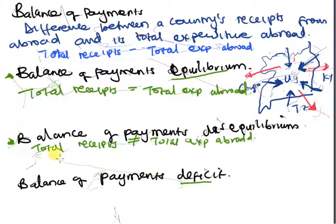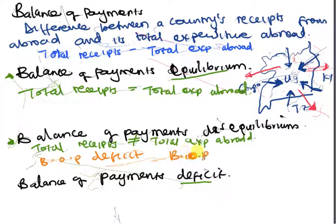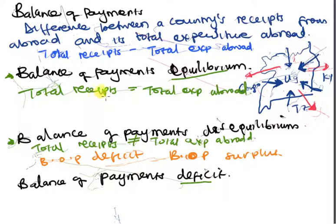From balance of payments disequilibrium, we get two situations: BOP deficit and BOP surplus. BOP equilibrium is where the total amount of money entering Uganda is equivalent to the total amount leaving. BOP disequilibrium means they are not equal, giving us either a BOP deficit or a BOP surplus.